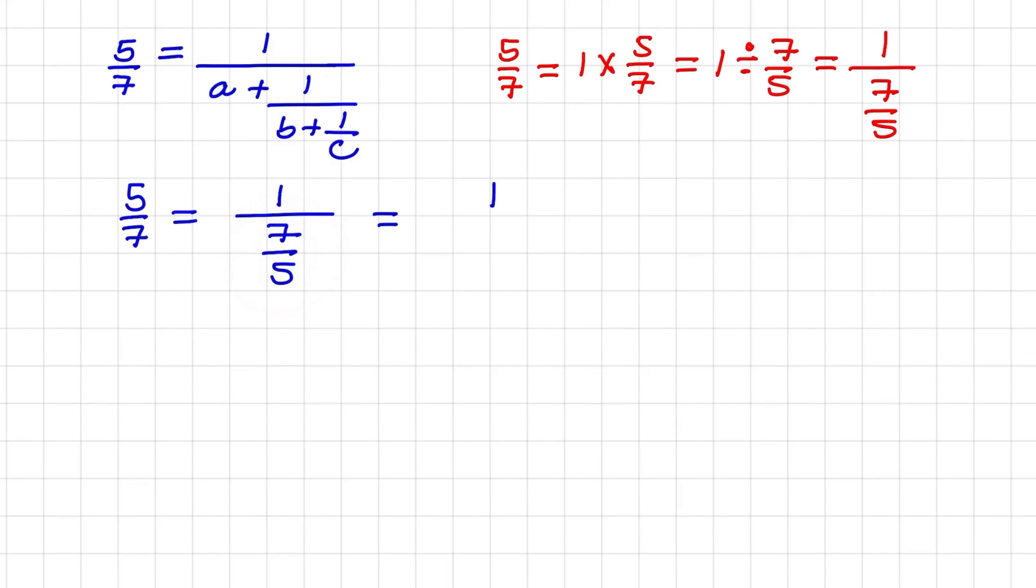If I rewrite that improper fraction, it will be 1 plus 2 over 5, because 5 goes into 7 once, and then there is a remainder of 2.